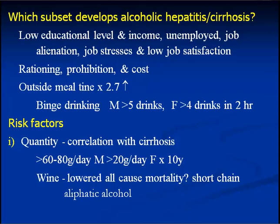Why is it that all people who take alcohol do not develop liver disease? The subset which usually gets affected is the one who has a low educational level, low income, is unemployed, has job alienation, job stresses and low job satisfaction. Although there are many affluent people who also get affected, most of the people affected in clinical practice belong to this group.